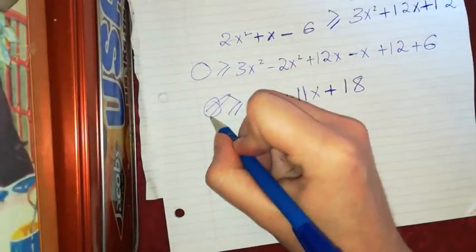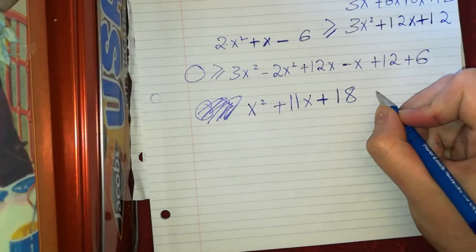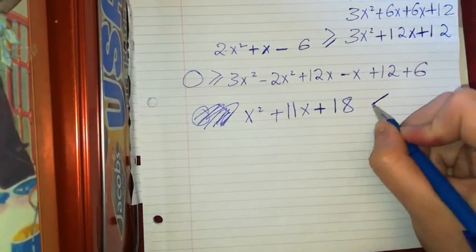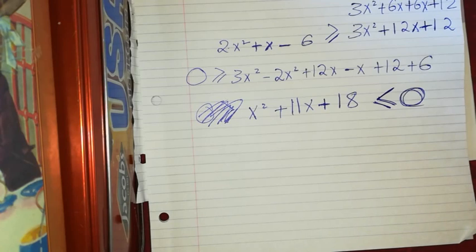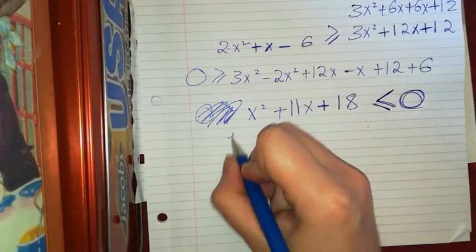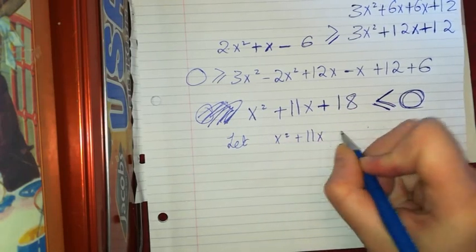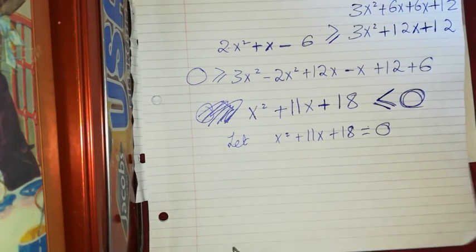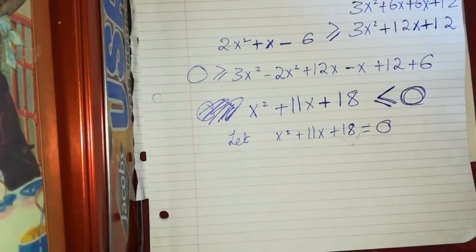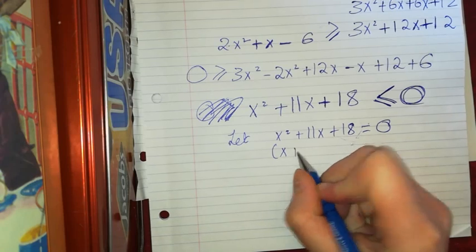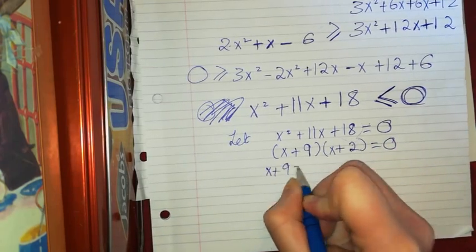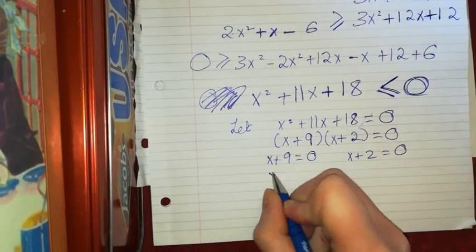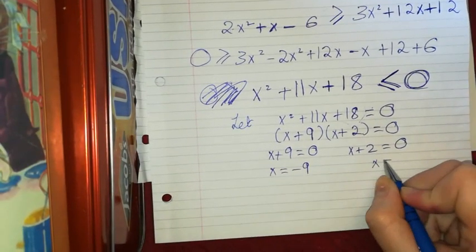I'll let x squared plus 11x plus 18 equal 0 and solve. I need factors of 18 that add to 11 — that's 9 and 2. So it factors as (x plus 9)(x plus 2) equals 0, giving x plus 9 equals 0 or x plus 2 equals 0, so x equals minus 9 and x equals minus 2.